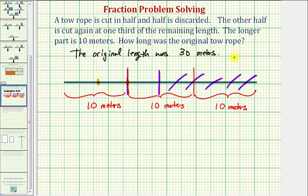Now let's solve this again algebraically. We'll start by assigning a variable to the unknown value, which in this case is the original length of the tow rope. So we'll let x equal the length of the original tow rope.